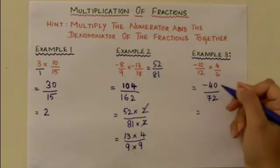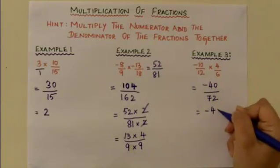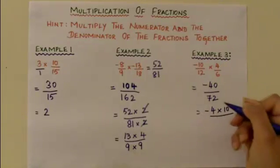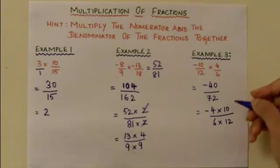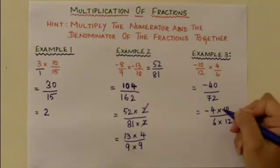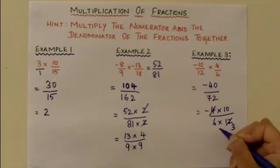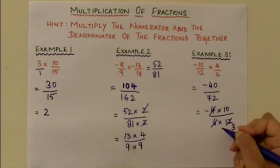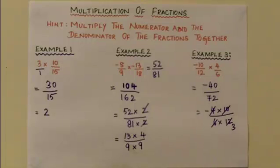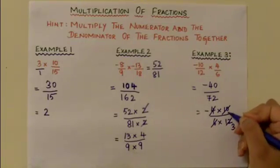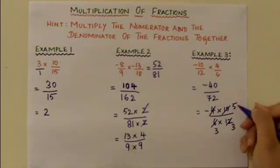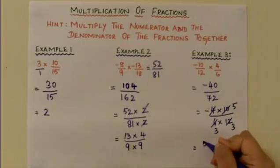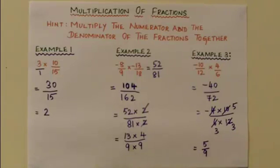-40/72 can be simplified. -40 can be written as -4 times 10, and 72 as 6 times 12. This can be reduced: 4 goes into 12 three times. 6 and 10 have a common factor of 2, so 2 goes into 10 five times and into 6 three times. The final answer is -5/9.